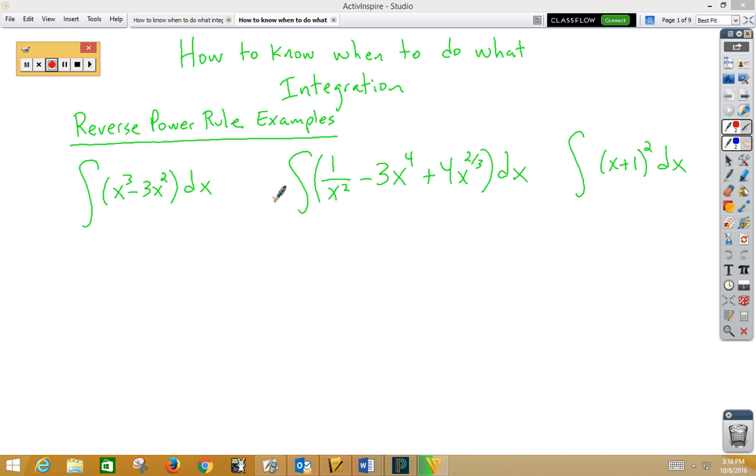First of all, let's talk about reverse power rule examples, which is the first thing we learned. Notice in this problem, even though there are parentheses, there's no outside function, so this is just a straight integral we can integrate one term at a time using the reverse power rule.